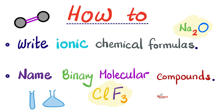We talked about polyatomic ions, binary compounds, and ternary compounds. As for today, I'll teach you how to write ionic chemical formulas, how to name ionic chemical formulas, and how to name binary molecular — covalent, not ionic — compounds.